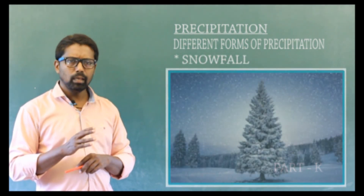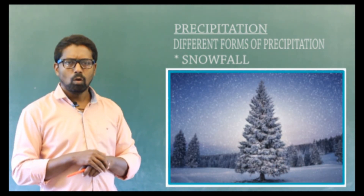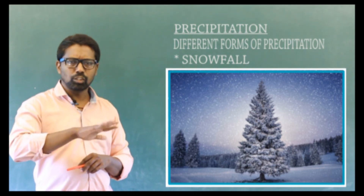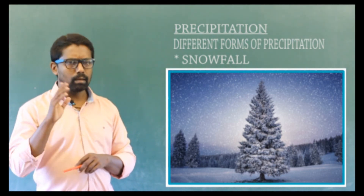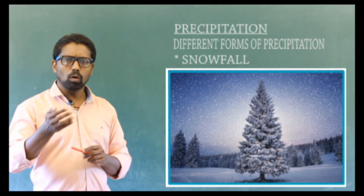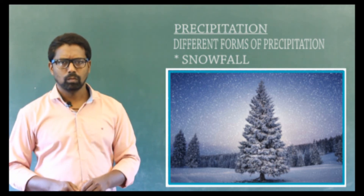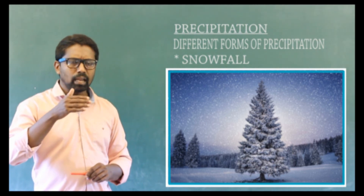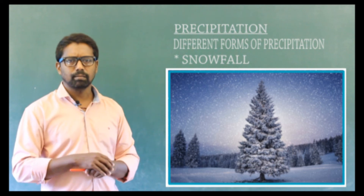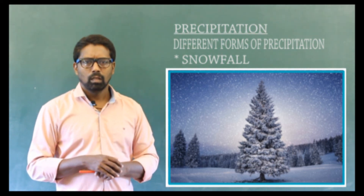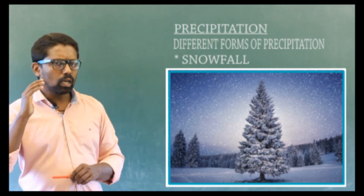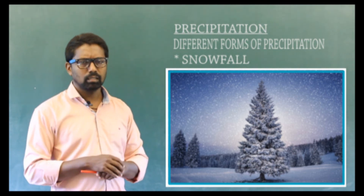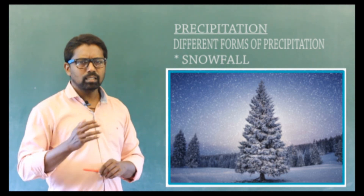Snowfall: when the temperature falls below zero degrees Celsius, precipitation reaches the earth in the form of tiny crystals of ice. This is snowfall.